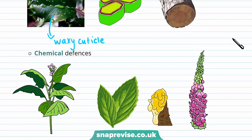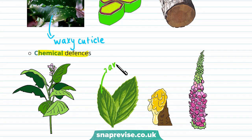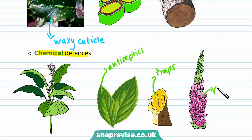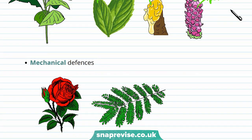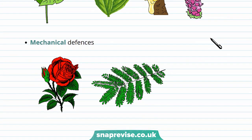Plants also have chemical defences. For example, plants can produce antiseptics which kill bacterial pathogens, or they can produce traps that trap animals or insects. Plants can also produce poison. Additionally, plants can have mechanical defences such as thorns, which we'll discuss later in the video.